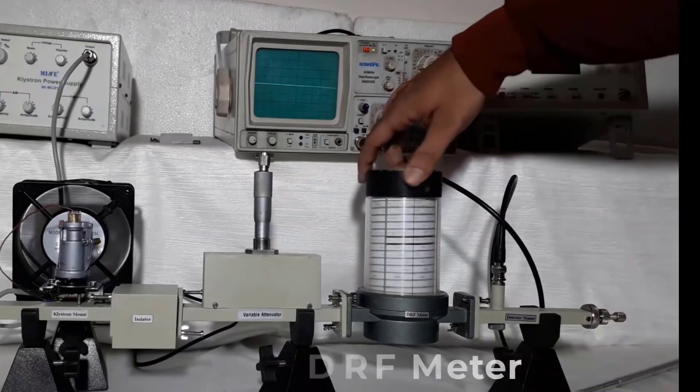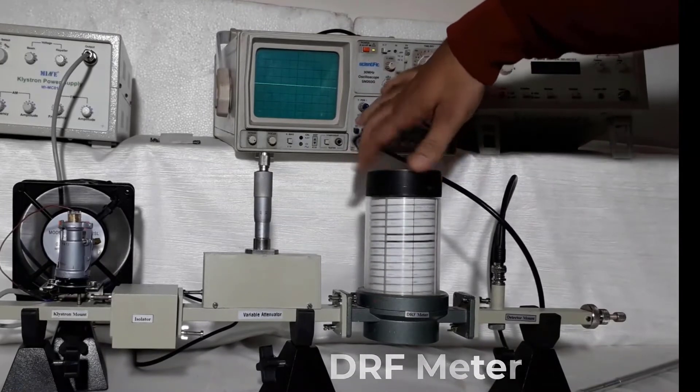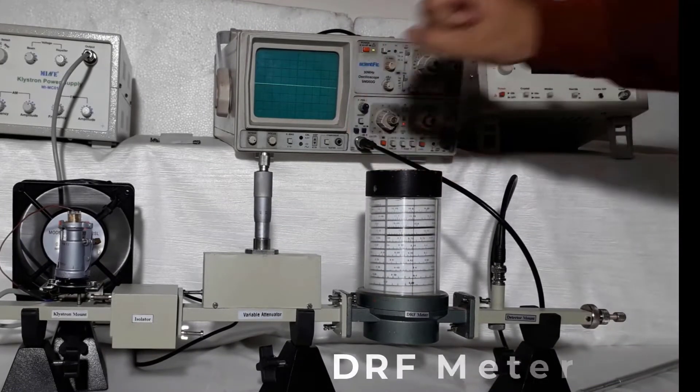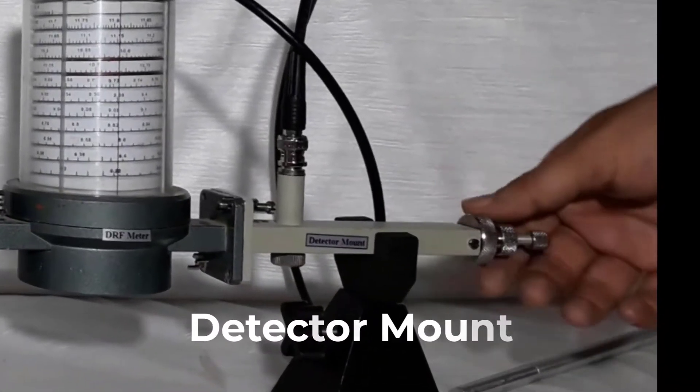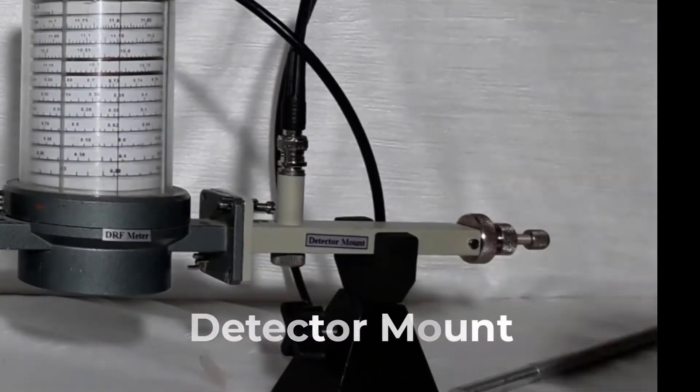Direct read frequency meter is used for measuring frequency of microwave. A detector mount is placed at the end of the test bench for measuring output on CRO.